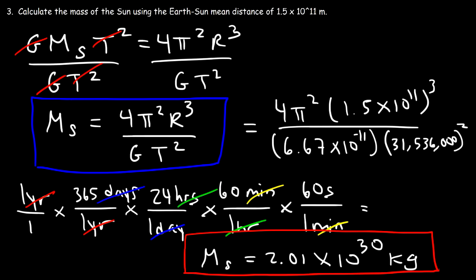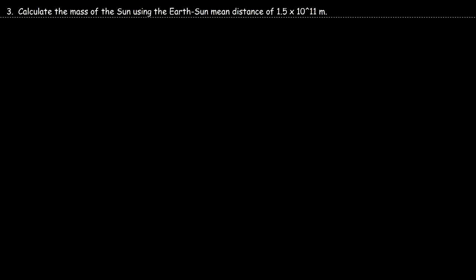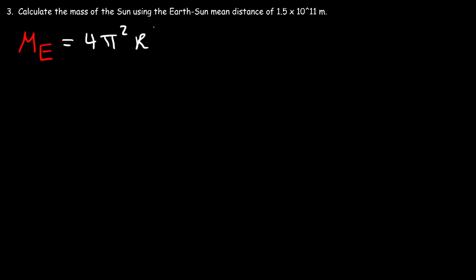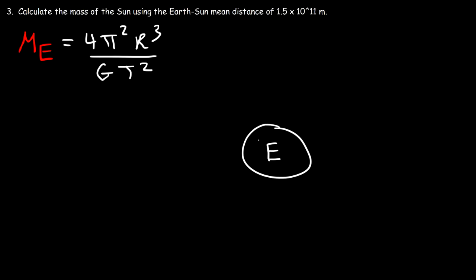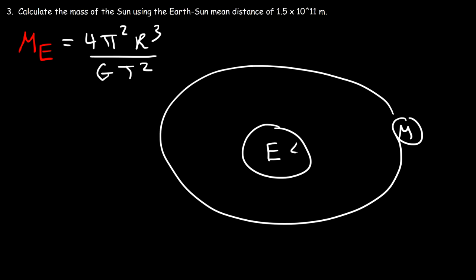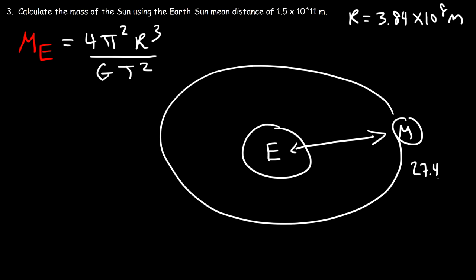Now let's calculate the mass of the Earth using the same formula. The Earth must be the central object, so we need something orbiting it — we'll use the Moon. We need the Earth-Moon distance, which is about 3.84×10⁸ m, and the Moon's period, which is about 27.4 days to orbit the Earth.